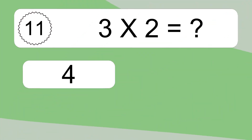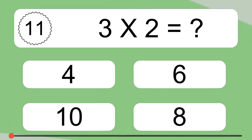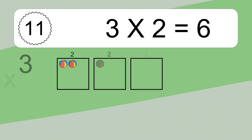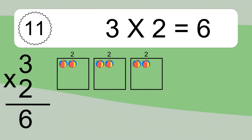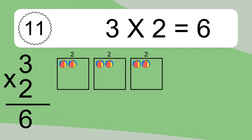3 times 2 equals what? 3 times 2 equals 6. We have 3 boxes and each box has 2 colorful balls inside. If you count all the balls in all the boxes together, you will have 3 times 2 balls. This equals 6 balls.